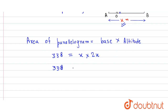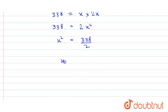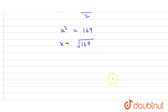So we get 338 = 2x squared. The value of x squared will be equal to 338 divided by 2, which gives us x squared = 169. So x will be equal to the square root of 169, which gives x = 13.